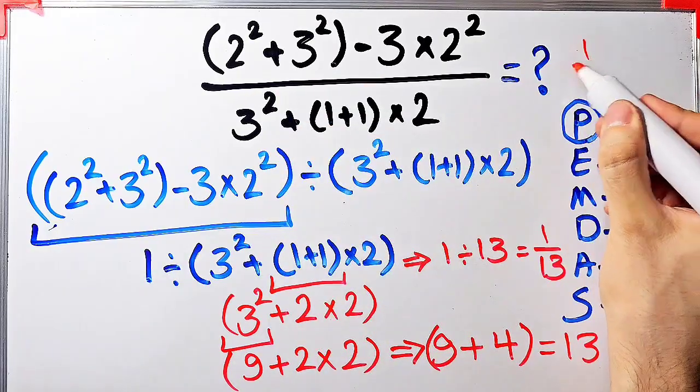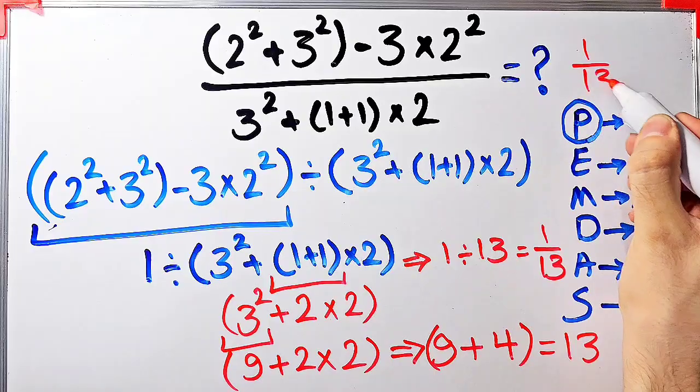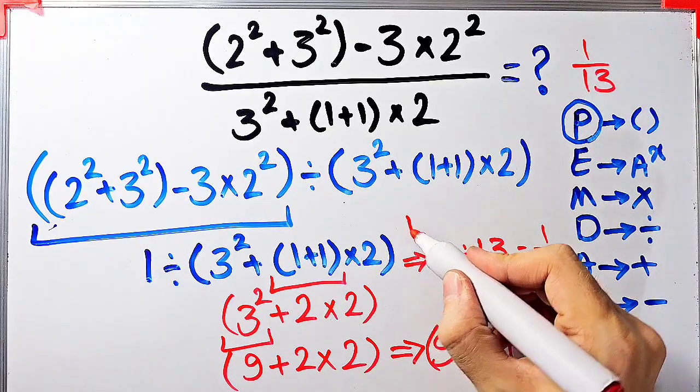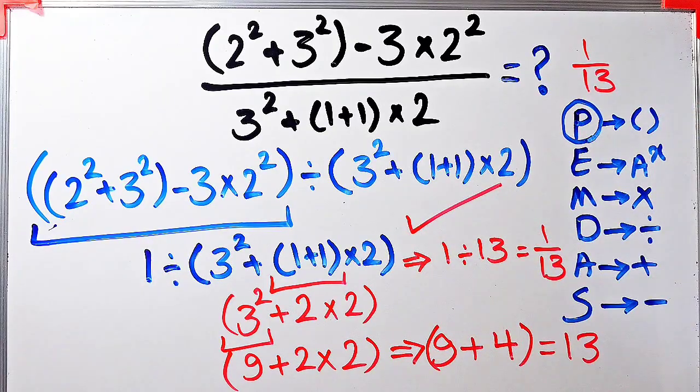Now the question is 1 divided by 13, and 1 divided by 13 equals 1/13. The final answer of this question equals 1/13.